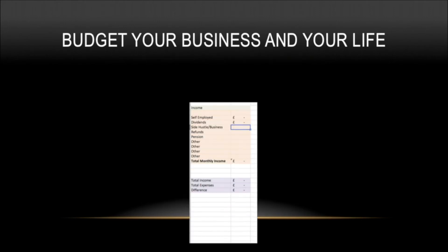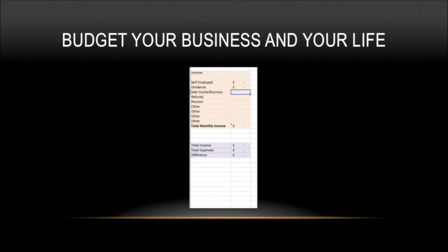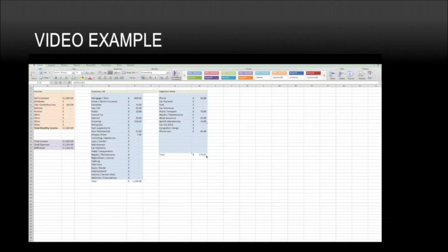On the other side you will see all your income. I've divided it into self-employed income, dividends, and if you have a side hustle or do other work. If you have a pension, only your income for your business will go on the total income. Your side business income also goes here, because if you do another job that maybe happens two times a month, you can keep track of that too. I'm going to show you an example of how this spreadsheet works in more detail.